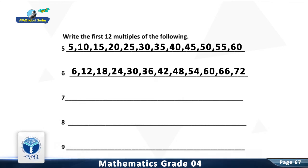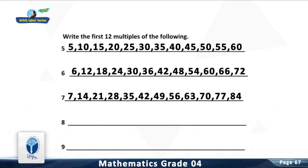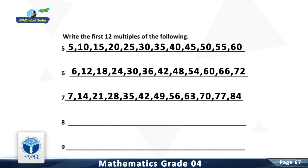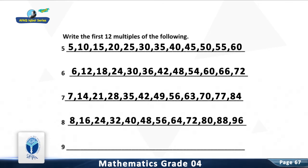Question 7: Write the first 12 multiples of 7. Question 8: Write the first 12 multiples of 8. You are right. The first 12 multiples of 8 are 8, 16, 24, 32, 40, 48, 56, 64, and 72.